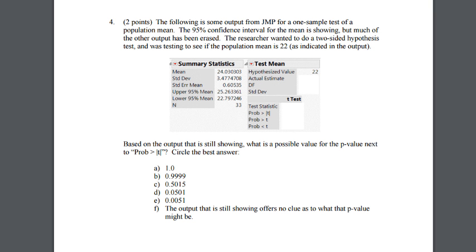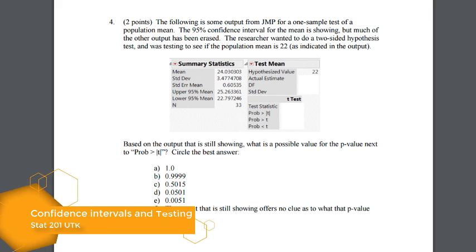For this next question you're given some blanked out JMP output and you're asked to figure out the p-value for a two-sided alternative. Now this is testing a mean.